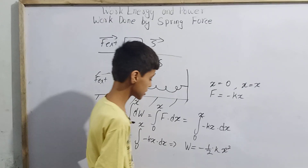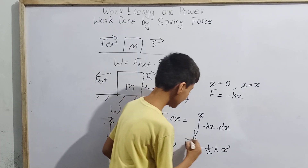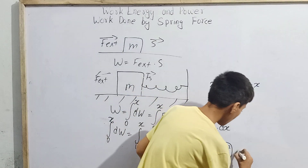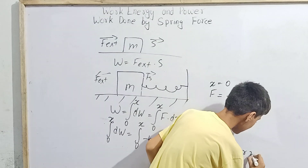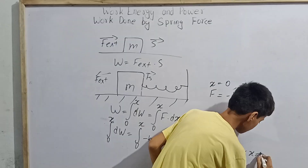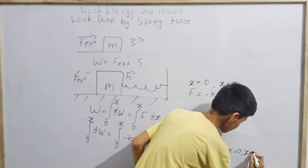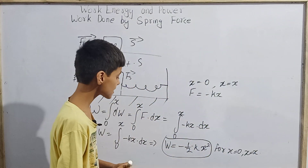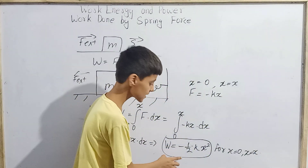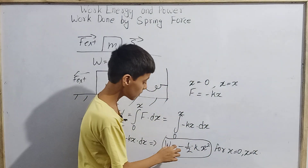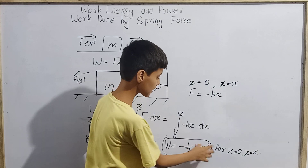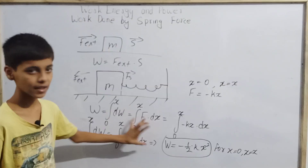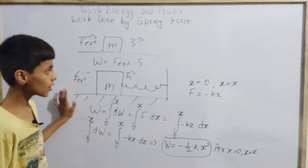So for x equals 0 and x equals x, the equation W = -½kx² can be used to find the work done by the spring force.